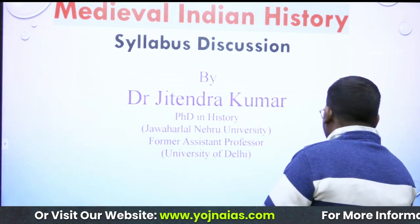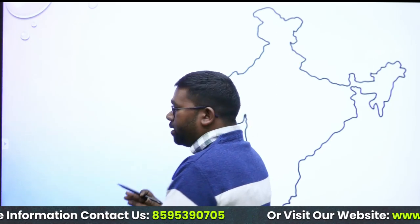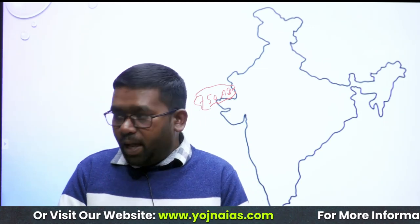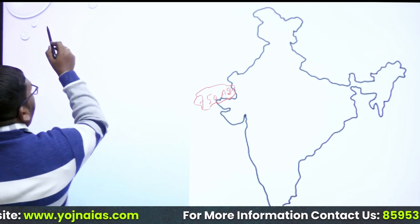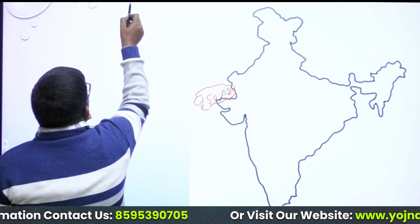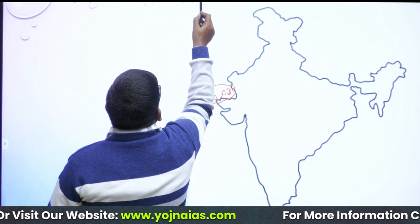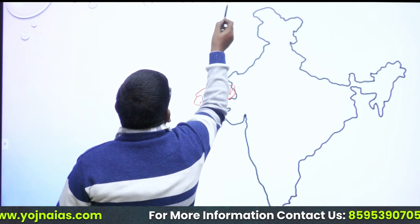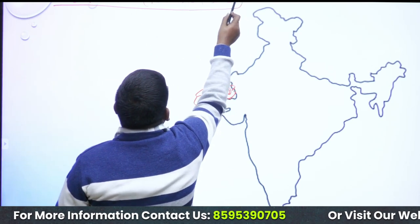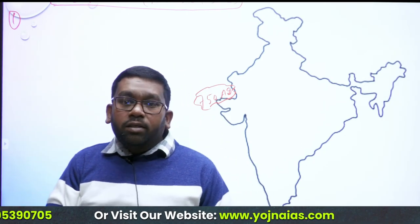In ancient India, we discussed that ancient India ends by the time of 750 AD. So medieval India will start from this time. The time period of medieval India we generally take from 750 AD and it goes up to 1750 AD, after which the modern period begins. So this is the main time frame of medieval India, and the first chapter starts from 750 AD, which is early medieval India.